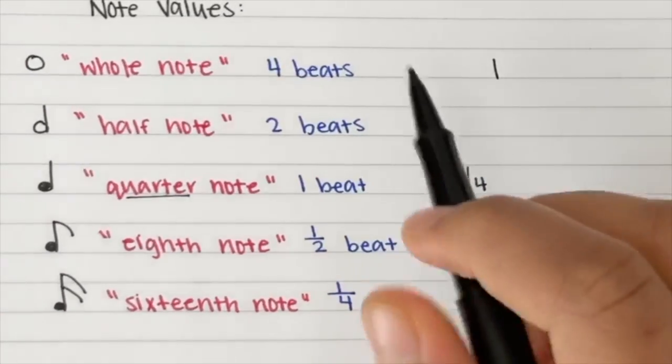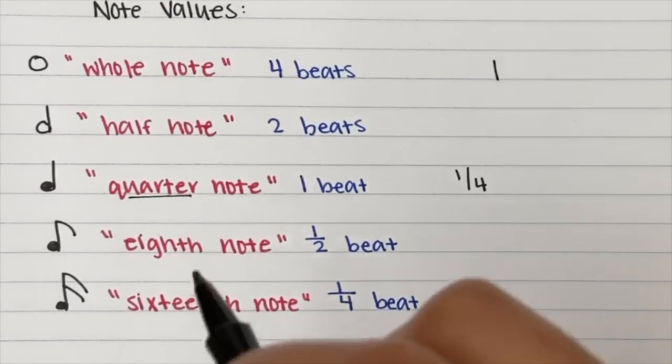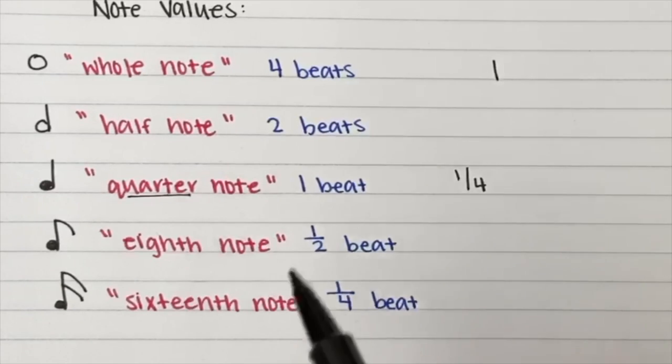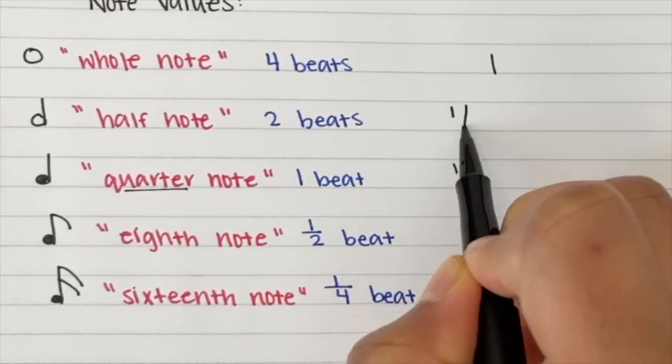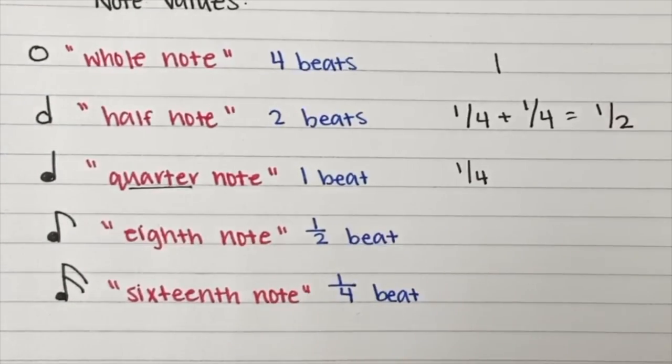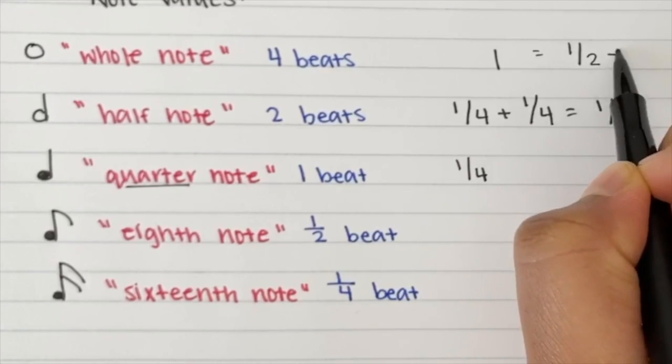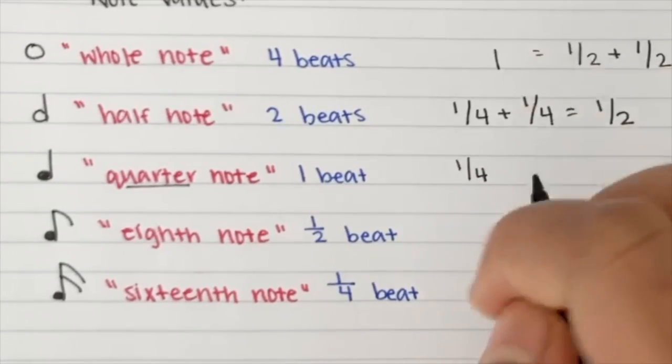So a half note, I don't know if you guys have learned fractions yet or not, but a half note is made up of two quarter notes, which makes sense because one fourth plus one fourth equals one half note. And then a whole note is equal to two half notes or four quarter notes.